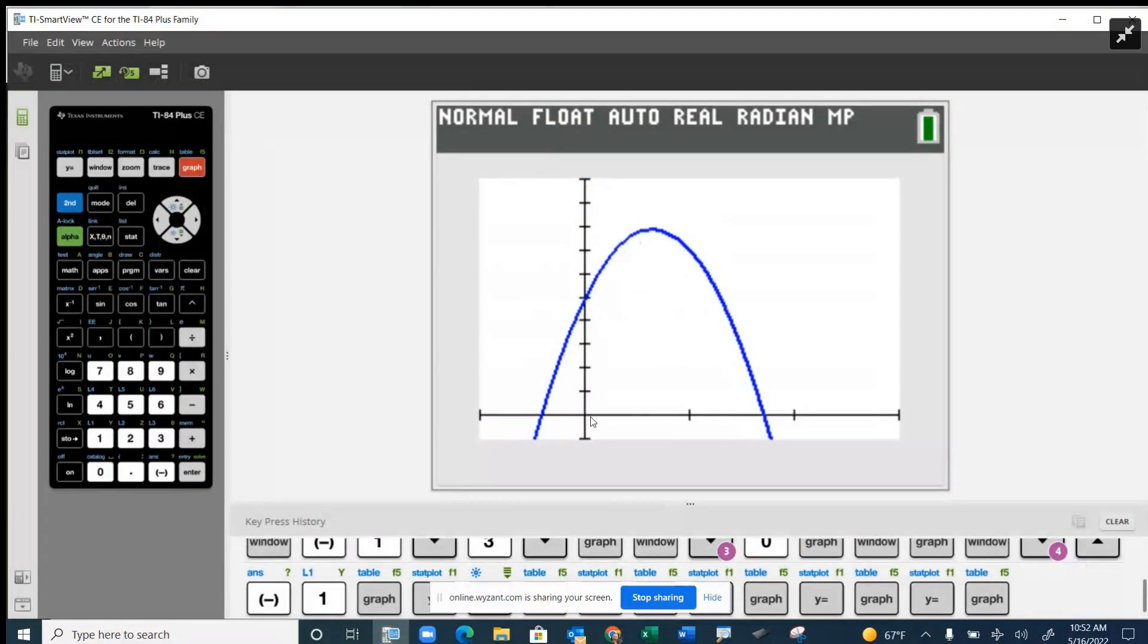The x-axis represents how much time the ball has been in the air, so one second, two seconds, three seconds, etc. And the y-axis represents how many feet up into the air the ball is. So the ball at zero seconds starts one, two, three, four, five feet up into the air.